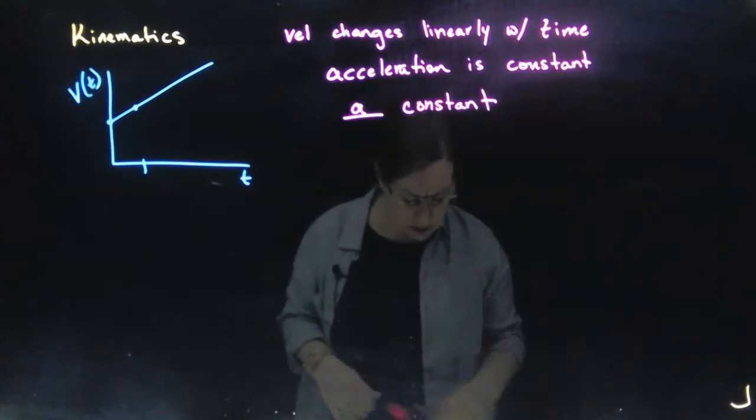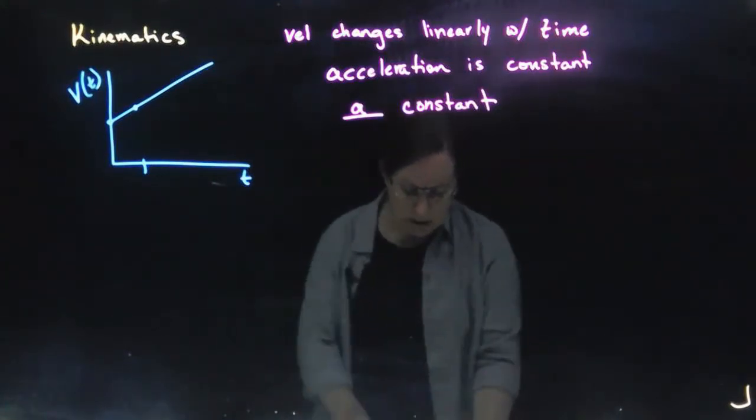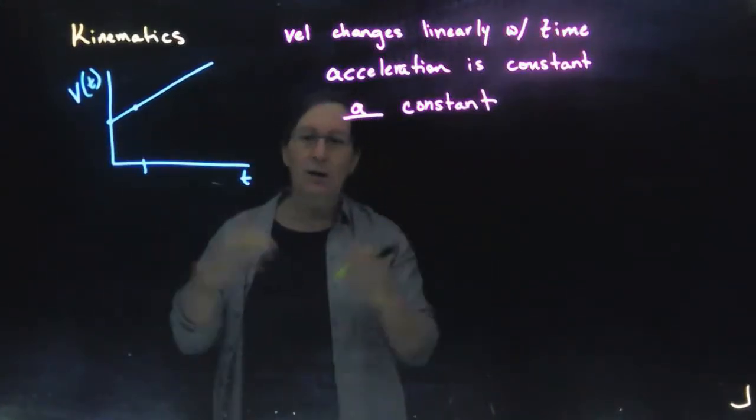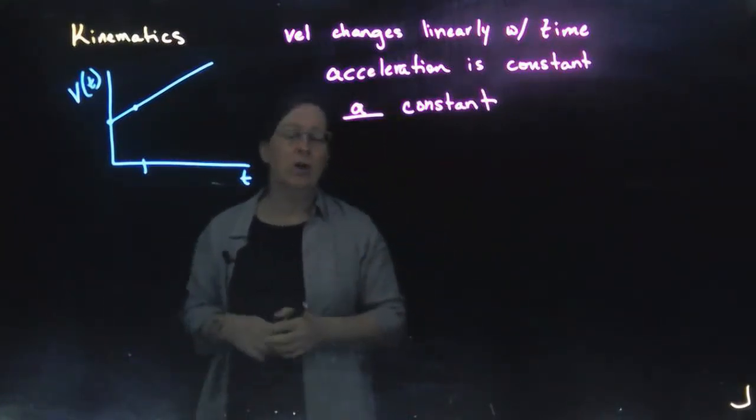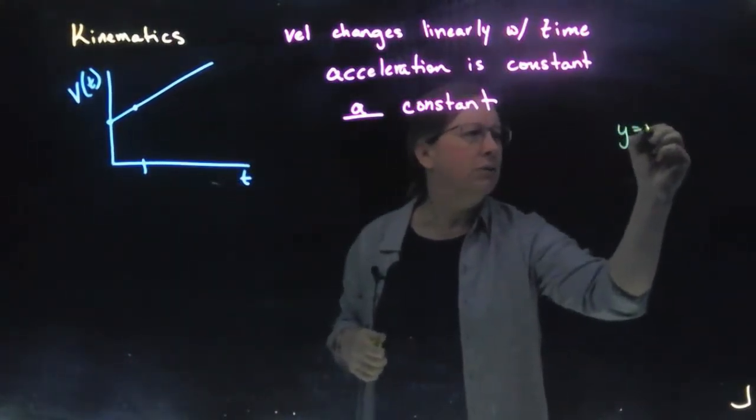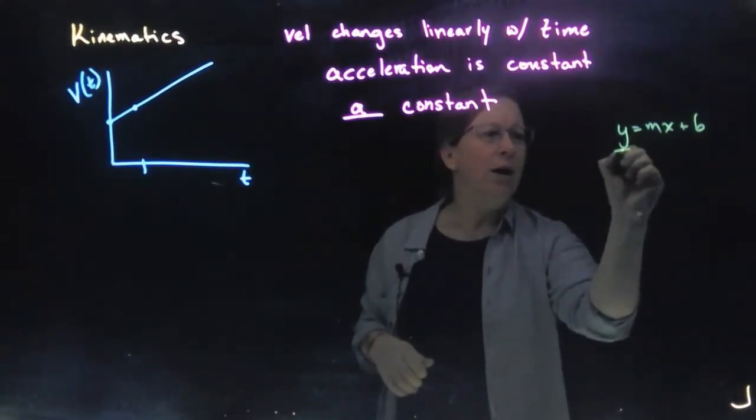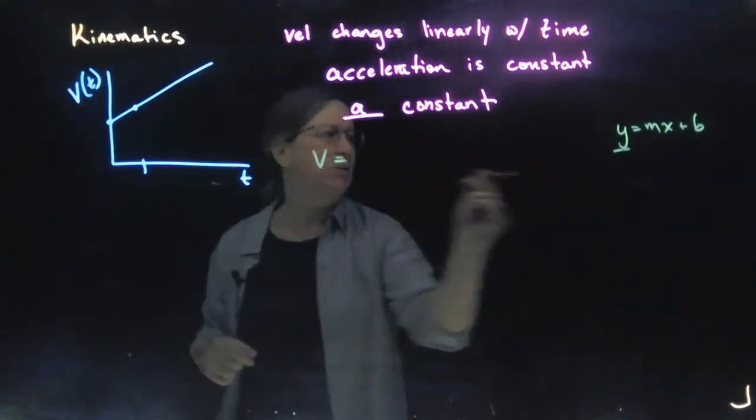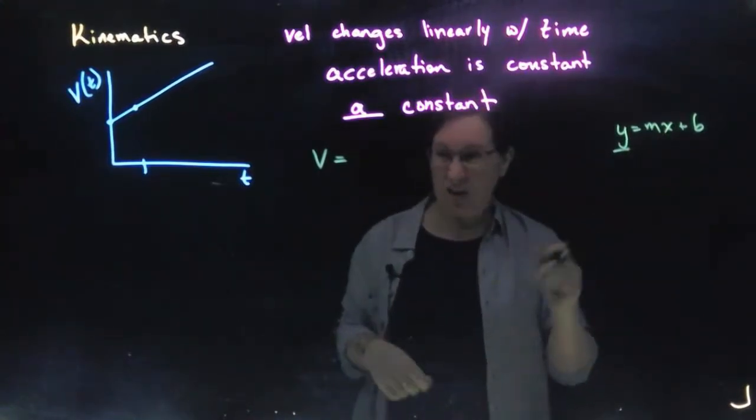Now, if your acceleration is constant, we can recognize almost immediately, I hope, that I can write an equation for my velocity as a function of time. It's just an equation of a line, right? And if we remember back, an equation of a line is y equals mx plus b. That should look familiar. In this case, on our y-axis, we have v. So we have v is equal to mx. Well, m is our slope. x is whatever's on our x-axis. So that's time.